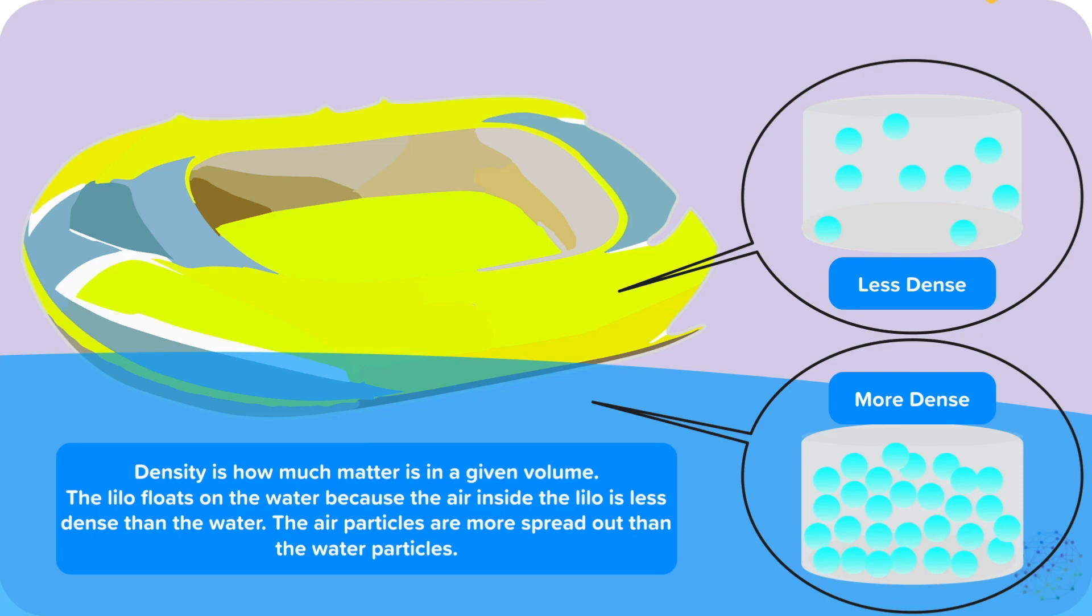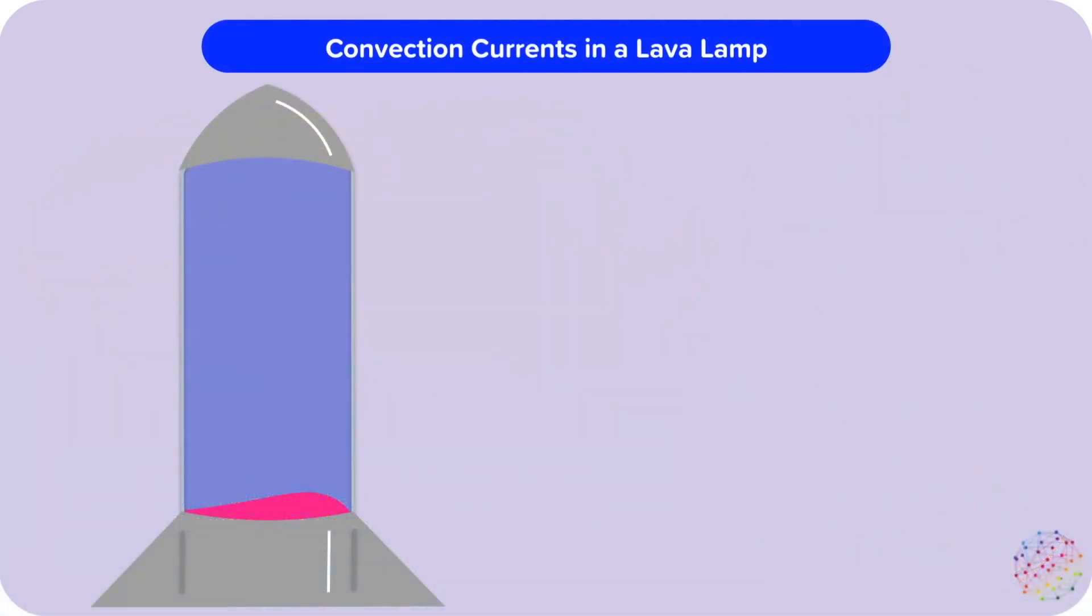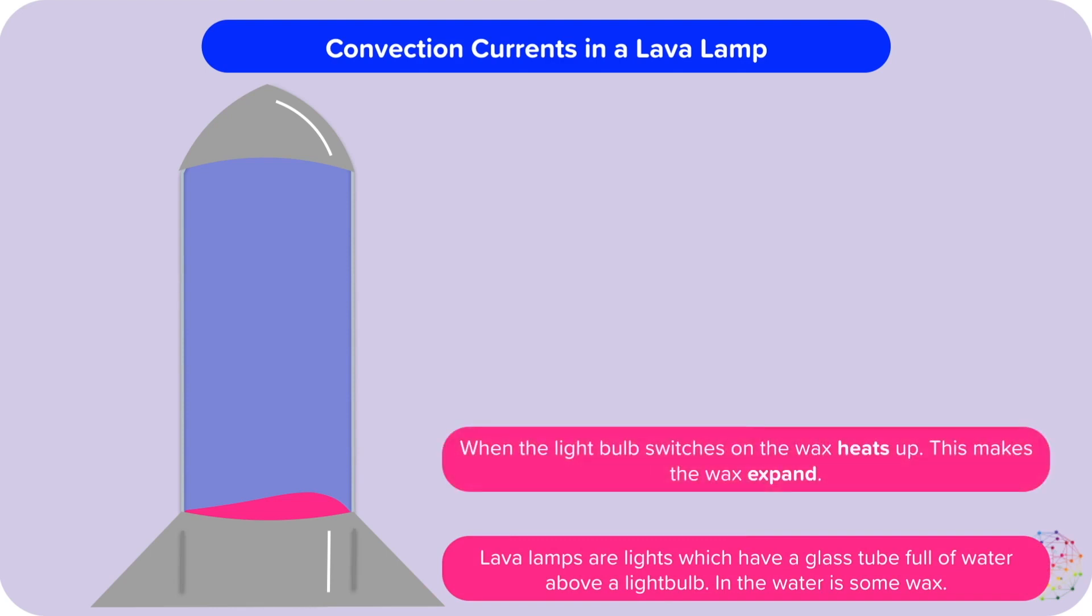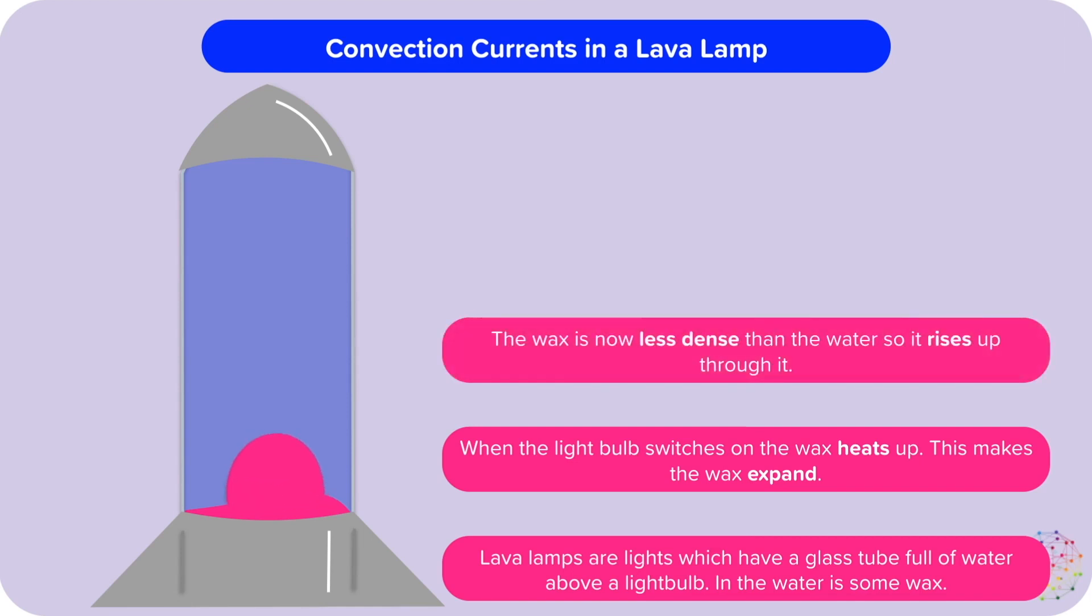Let's put all those ideas together now and look at convection. Let's use a lava lamp as our example. Lava lamps are lights which have a glass tube full of water above a light bulb, and in the water is some wax. When the light bulb switches on, the wax heats up. This makes the wax expand. The wax is now less dense than the water around it, so it rises up through the water.